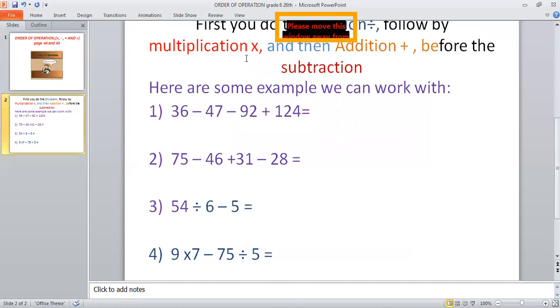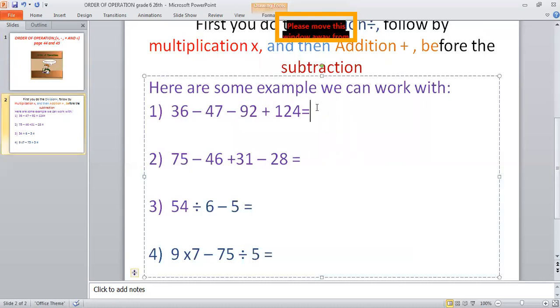Here are some of the examples. We have 36 minus 47 minus 92 plus 124. So what we're going to do here is this. We're going to take 36 plus 124. What will be our answer? 160.